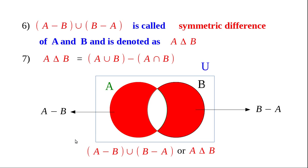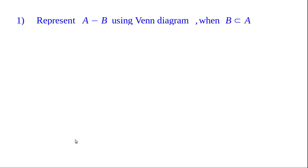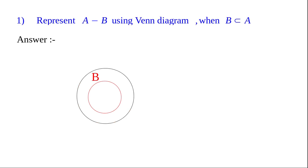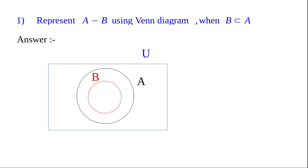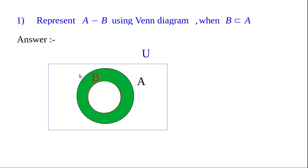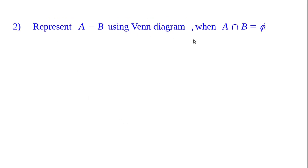Now let us discuss some simple questions. First: represent A minus B using a Venn diagram when B is a subset of A. First draw B, then draw A covering B wholly because A is the superset of B. Don't forget to draw the rectangle for the universal set. We want to shade A minus B — that portion must lie in A but not in B. Delete the elements in B from A. You get the ring-shaped or annular portion as A minus B.